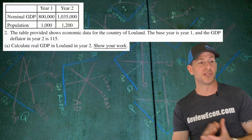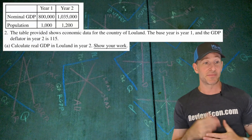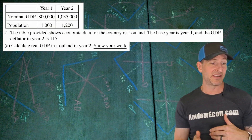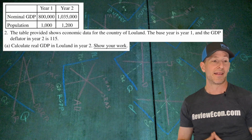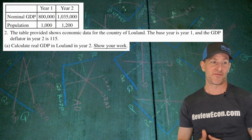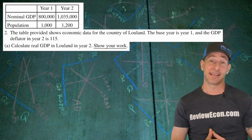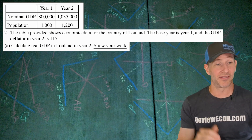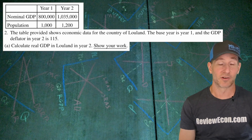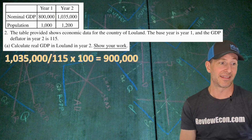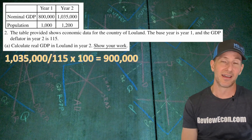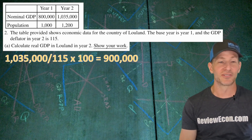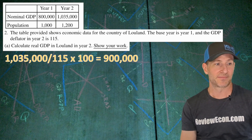On to question number two. We have a table showing economic data for Luland based on the base year, year one, and the GDP deflator for year two is 115. First, we're going to calculate the real GDP of Luland in year two. Remember your formula: nominal divided by the GDP deflator, then times 100. So I've got 1,035,000 divided by the GDP deflator of 115 times 100, which equals $900,000 of real GDP in year two.